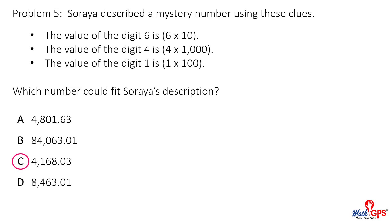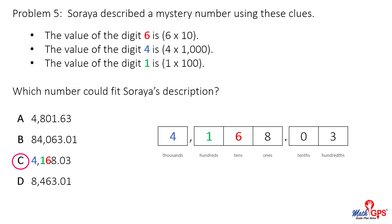The correct answer is C. A place value model will justify answer choice C. If the six is placed in the tens place, if the four is placed in the thousands place, and if the one is placed in the hundreds place based on the expanded notation clues, answer choice C is the only number with matching digits in the correct place.